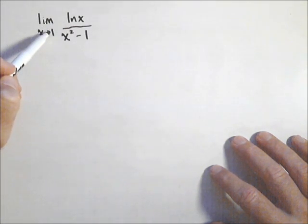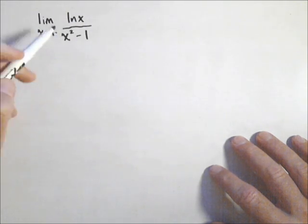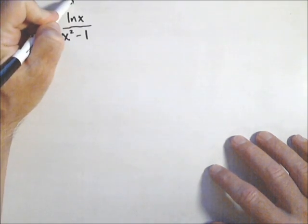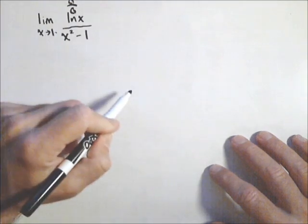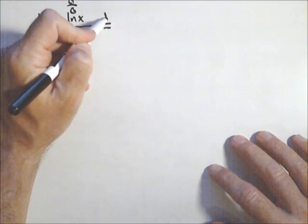For instance, in this one, if I plug in one for x, I get a zero over zero case, and I like to denote that above. That's what allows me to use L'Hopital's.